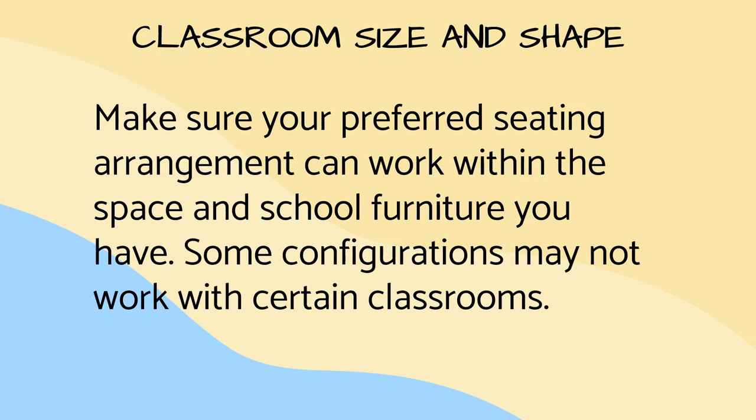You should also be aware of your classroom size and shape. Make sure your preferred seating arrangement can work within the space and school furniture you have. Some configurations may not work with certain classrooms. Be aware of obstructions like poles, beams, walls, and other fixtures that can't be moved. Make sure your students can clearly see the board and screen. For more mobility, use a movable chalkboard or whiteboard if possible.